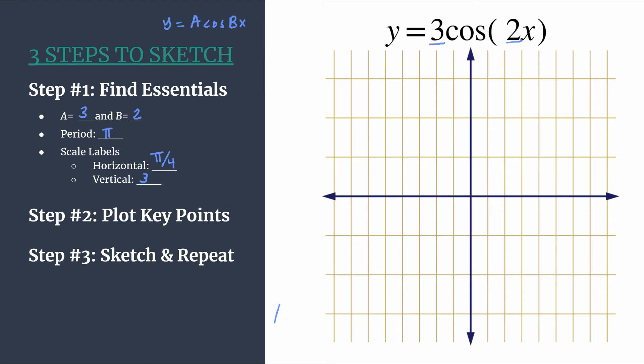So let's label our axes. We'll do our horizontal first. So we're going to have 1 pi over 4, 2 pi over 4 which reduces to pi over 2, 3 pi over 4, 4 pi over 4 reduces to pi, keep going, 5 pi over 4, 6 pi over 4 reduces to 3 pi over 2, 7 pi over 4, and 8 pi over 4.